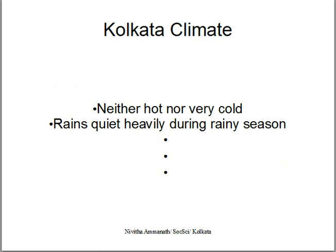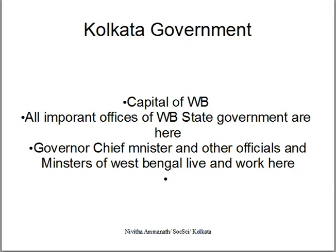The climate of Calcutta is neither very hot nor very cold because of the continental climate. On the seaside, land breeze and sea breeze keep the climate moderate. It rains quite heavily during the monsoon, so Calcutta is fertile because of the rains, the river basins, and also because of the Sundarbans.